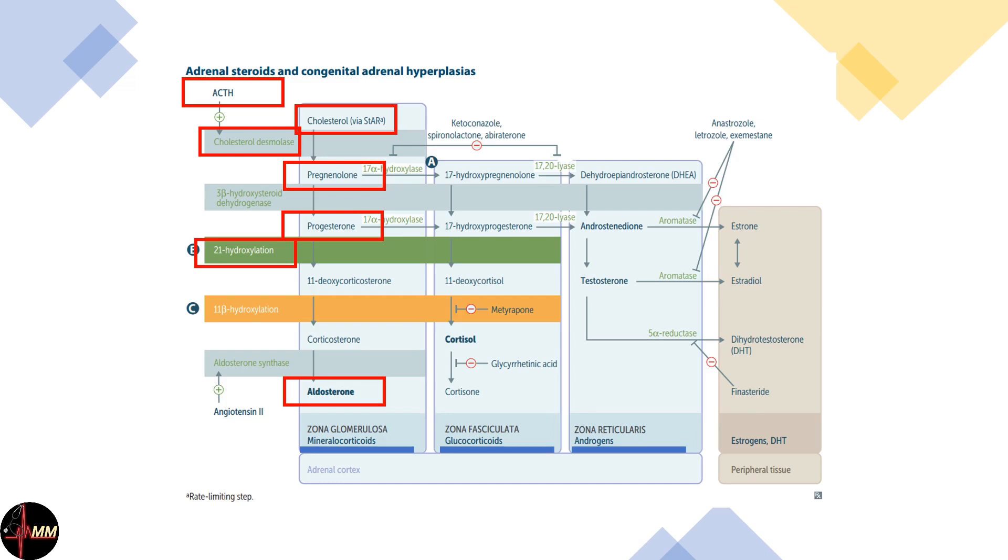In the glucocorticoid pathway, pregnenolone is converted to 17-hydroxyprogesterone, then to 11-deoxycortisol via 21-hydroxylase, and finally to cortisol.